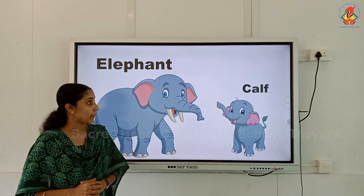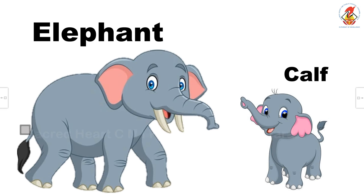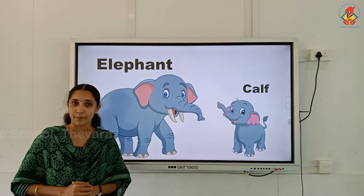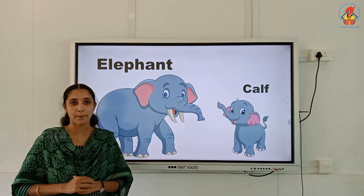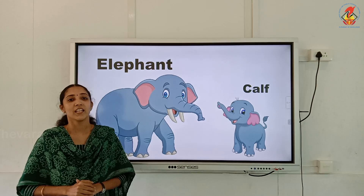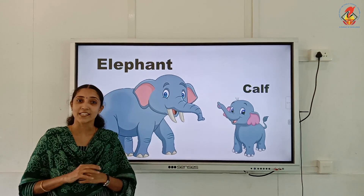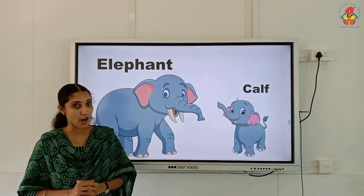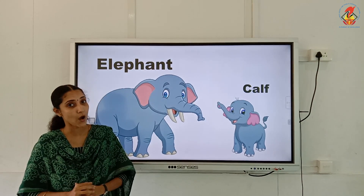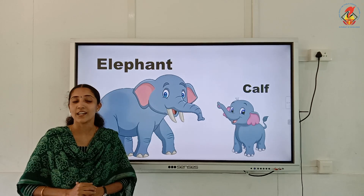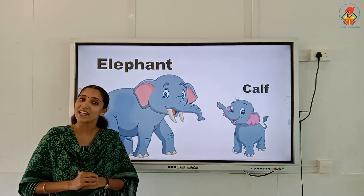Next, you can see the picture of an elephant. An elephant is a wild animal. The young one of an elephant is called a calf. And the sound made by an elephant is called a trumpet. So the young one of an elephant is called a calf and the sound it makes is called trumpeting.